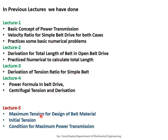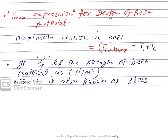In the fourth lecture we also derived the formula for centrifugal tension and studied it in detail. Now in the fifth lecture, we will see the maximum tension for the design of belt material, study what is initial tension, and see the condition for maximum power transmission.